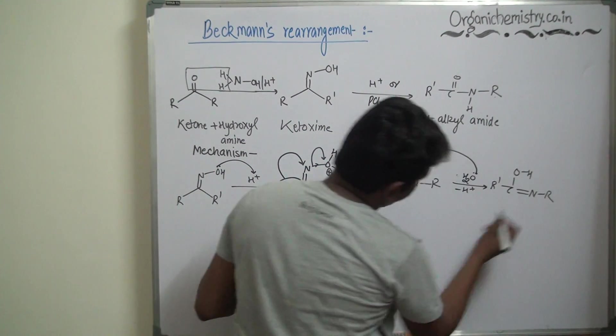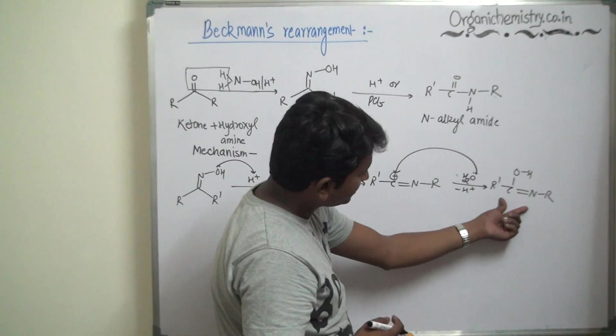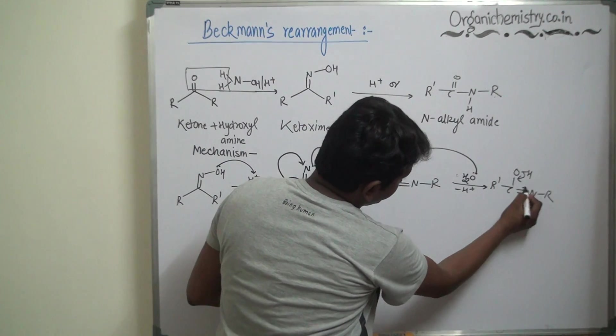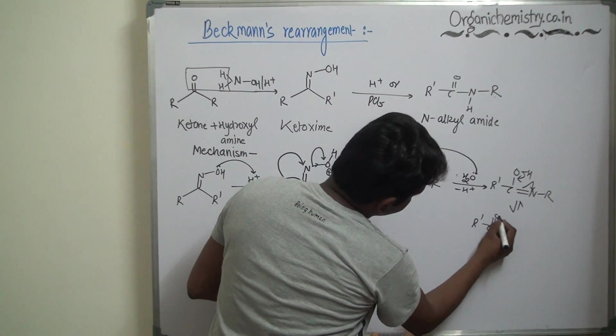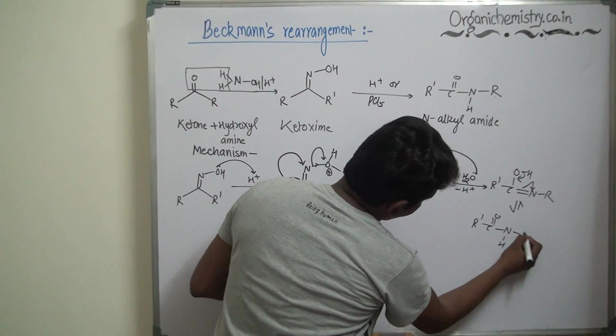Double bonding is having OH group, it will get tautomerized to finally give R' C O N H and R.